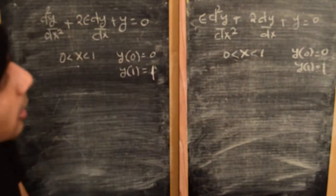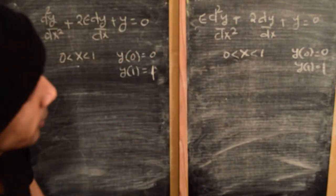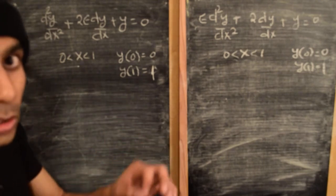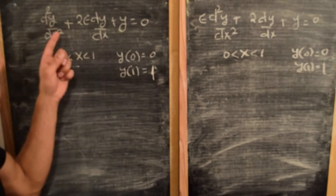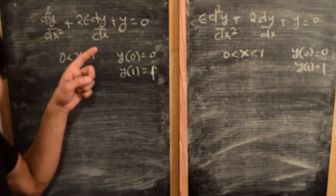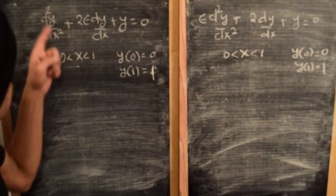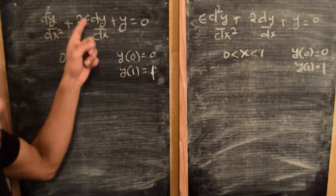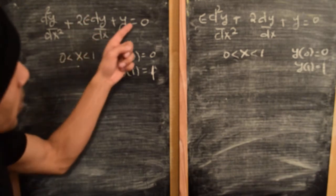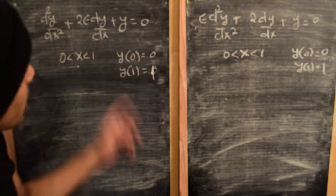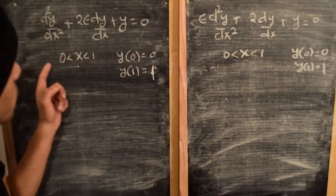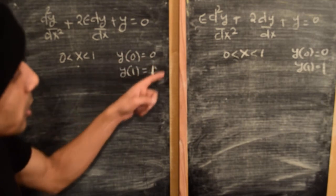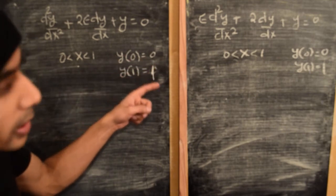Here we have two copies of exactly the same differential equation. In this case we have a second-order linear differential equation written in terms of the variable y, where y is the dependent variable depending upon x. We have a term d²y/dx² — the second derivative — plus 2 times a small parameter epsilon times dy/dx, plus y equals 0. We'll take x to be a variable going from 0 to 1, with boundary conditions y(0) = 0 and y(1) = 1.